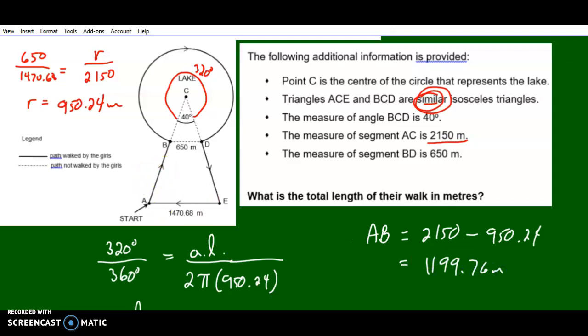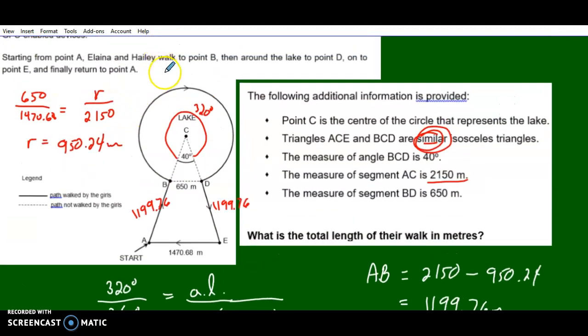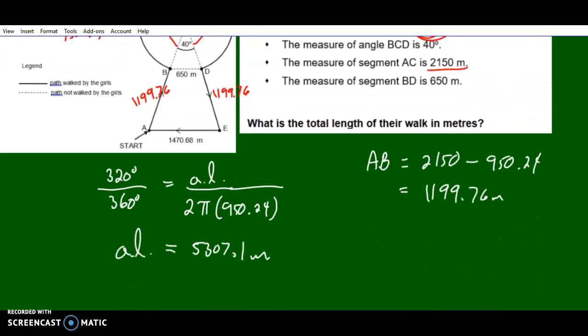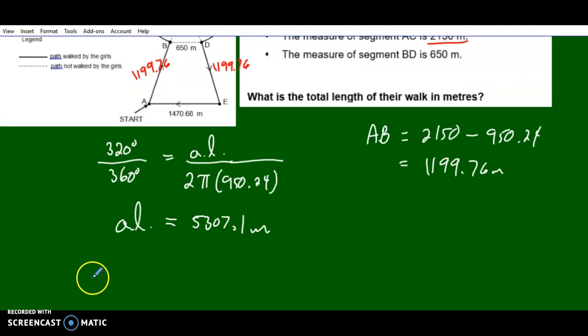I can write it over here. 1199.76. This is also 1199.76. And this whole thing was 5307. I can find the total distance by adding up all those numbers.